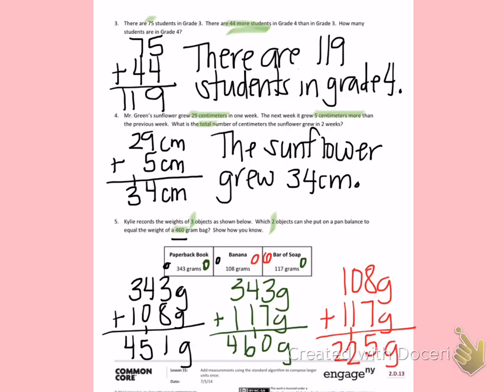So to answer Kylie's question, she would need to put the paperback book and the bar of soap on the pan balance to make it balance.